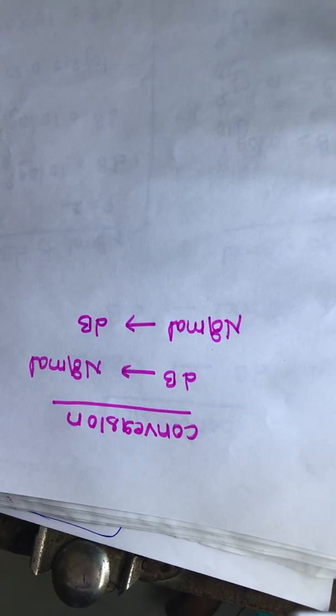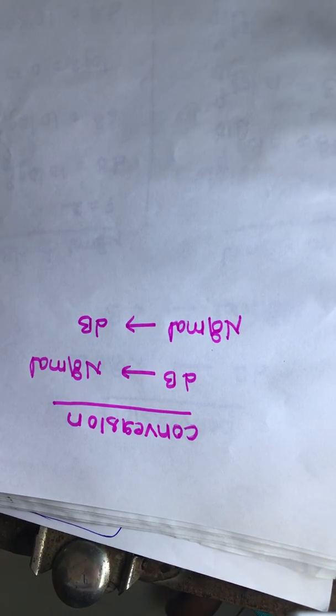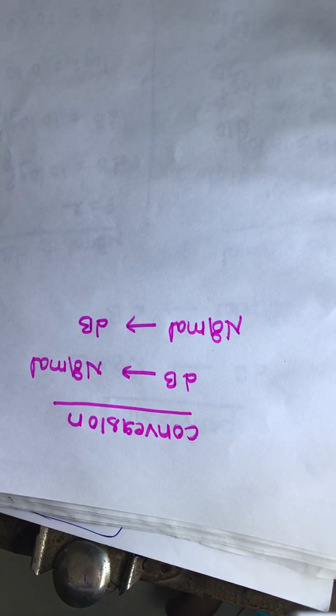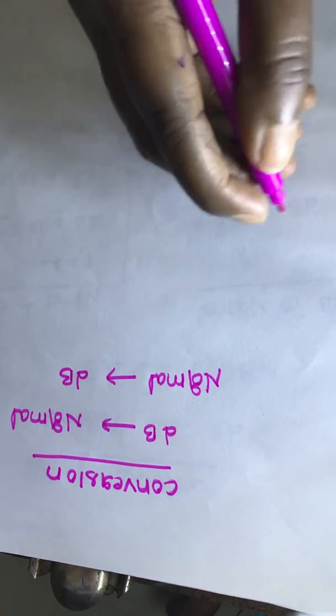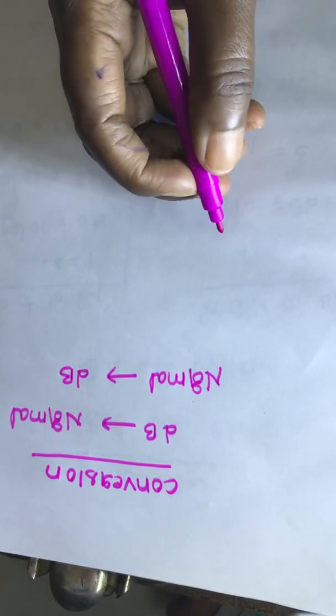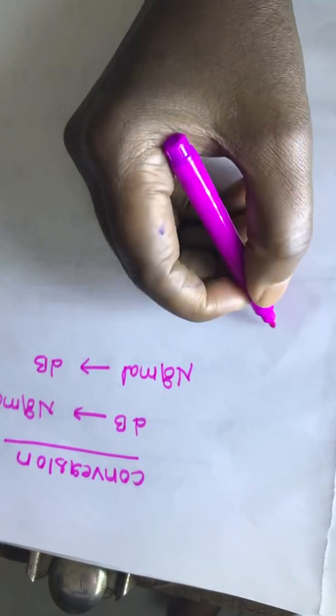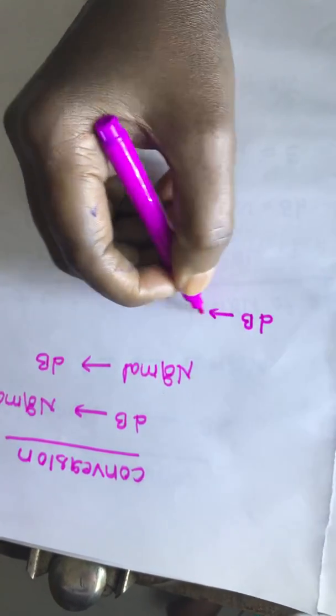First we will see what is mean by decibel scale. It is logarithm scale which is used to find voltage gain and power gain of a system. First we will see from dB scale to normal scale.